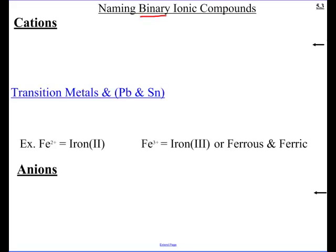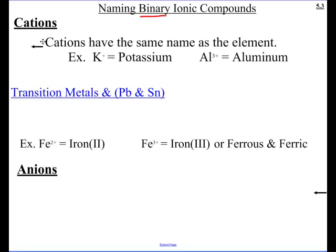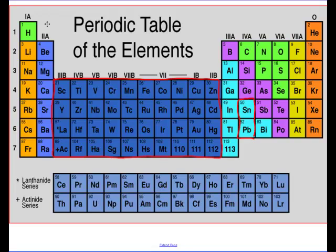Let's look at the first rule. For the cations, it's a really simple rule. They have the same name as the element. So a potassium ion is called potassium, and an aluminum ion is called aluminum. This only pertains for those elements that we know their charge. For example, we know that all group 1 elements, the alkaline metals, always form plus 1. The alkaline earth always form plus 2, and aluminum's group always forms plus 3.